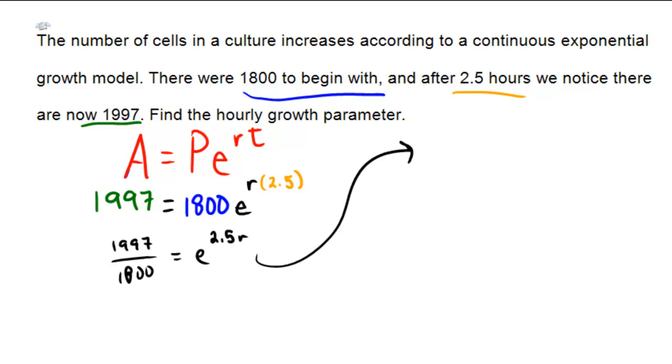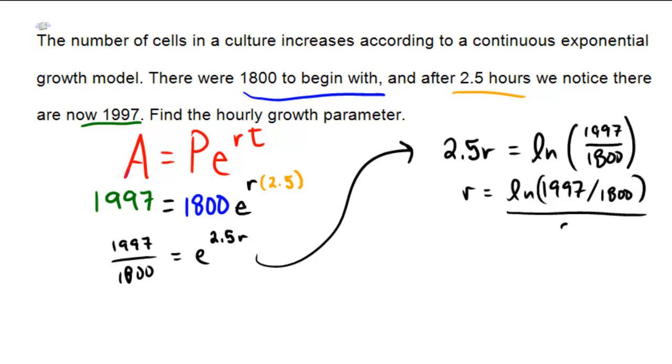I'm now going to take a logarithm on both sides, so 2.5r equals ln of 1997 over 1800, and then I'm going to divide by 2.5. So r equals ln of 1997 over 1800, all divided by 2.5.